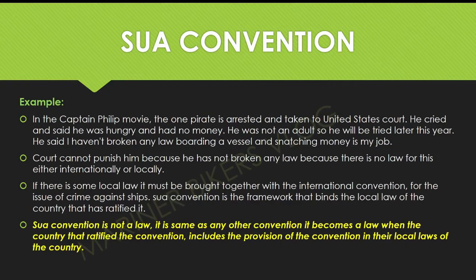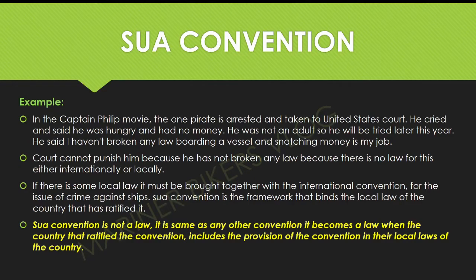In the Captain Phillips movie, one pirate is arrested and taken to a United States court. He cried and said he was hungry and had no money. He was not an adult, so he would be tried later. He said he hadn't broken any law — boarding a vessel and snatching money is his job. The court cannot punish him because there is no law for this, either internationally or locally. If there is some local law, it must be brought together with the international convention for the issue of crime against ships.